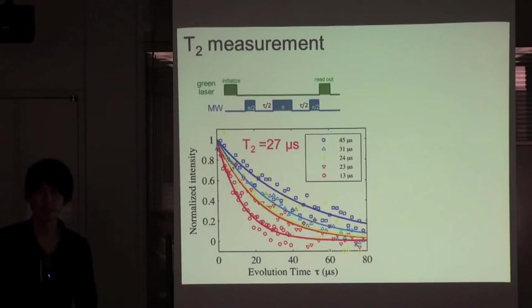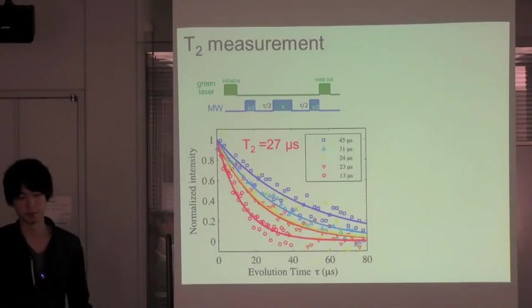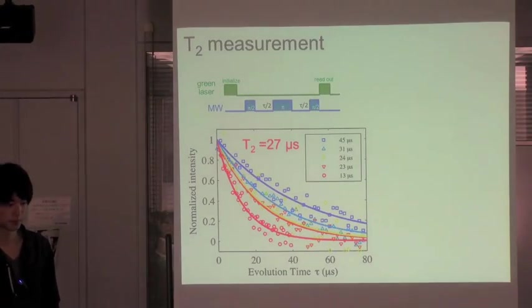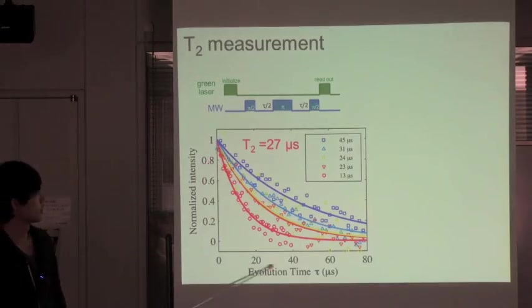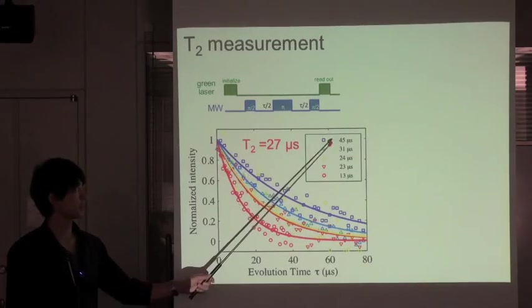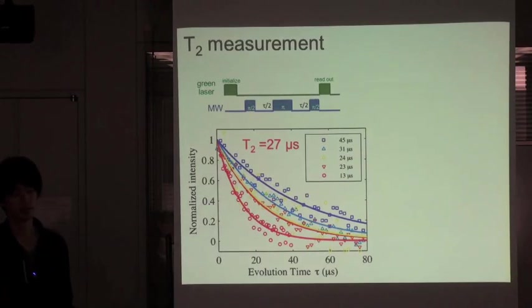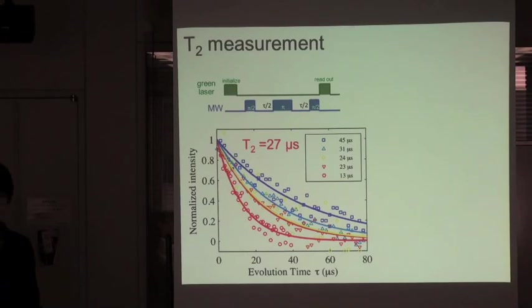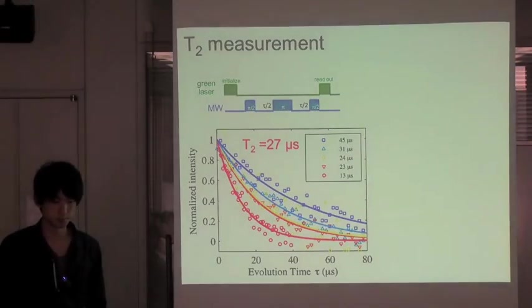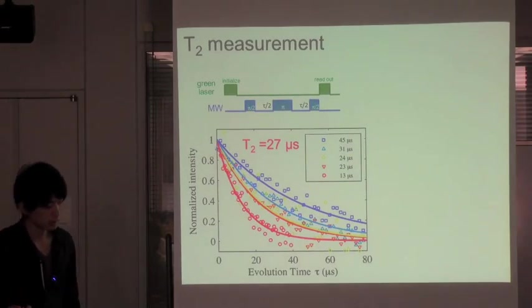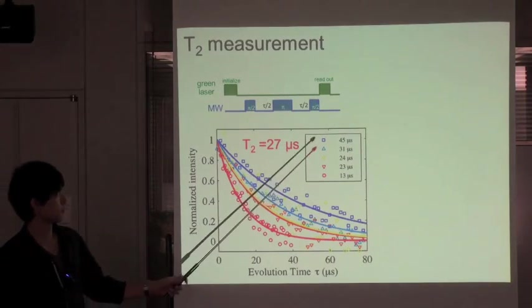Then, we characterized the spin property of this NV minus center. This is spin echo measurement for five different NV minus centers. All NV minus centers are in 5 nanometer thin film.